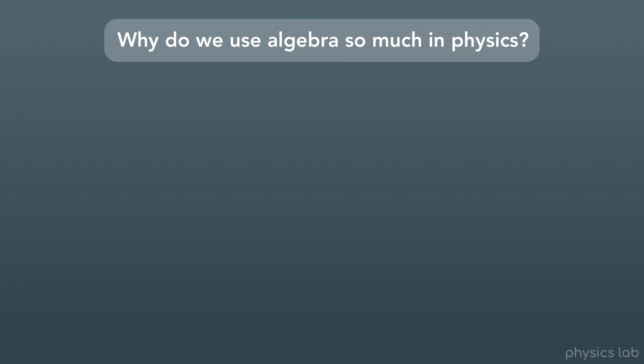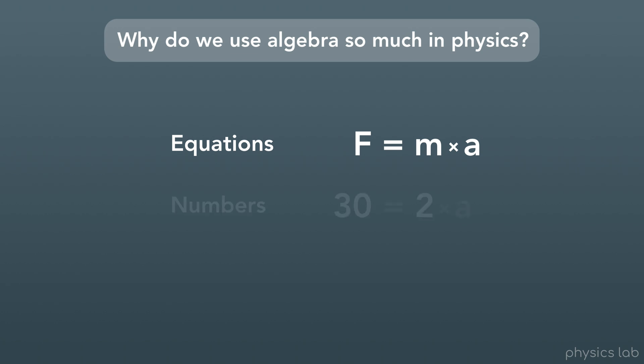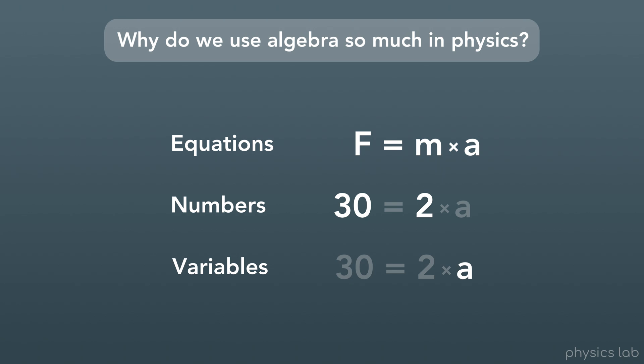So why do we use algebra so much in physics? Because in physics, we're using equations all of the time. When you see one on your equation sheet, all of the things in the equation are variables — usually there aren't any numbers, because we can plug in any numbers we want as long as the left side and right side are equal. As we work through a physics problem, we'll replace some variables with numbers we know, and usually there will only be one variable left, which we'll then solve for.